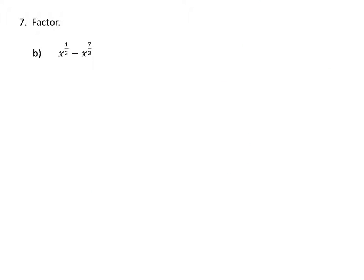To factor this next expression, let's rewrite one of the terms so that both terms have the common factor — the lowest exponent. The lowest exponent is one-third. I want to change 7 over 3 to include one-third, so I think about one-third plus what gives me seven-thirds.